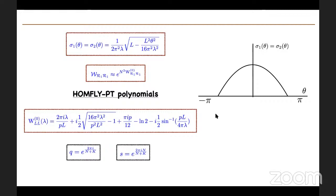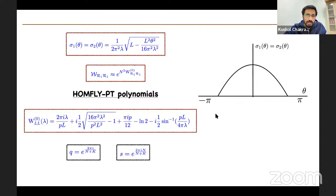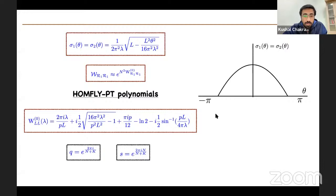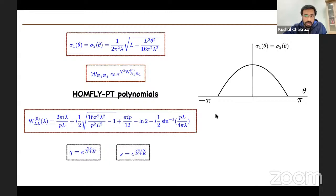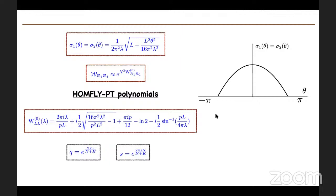Regarding more complicated non-torus knots, the speaker acknowledged there is currently no idea how to generalize these results. One suggestion was to calculate higher correlation functions in Chern-Simons theory — for example, Wilson loops with more components like the Borromean ring, which is a three-component generalization of the Hopf link. The speaker confirmed there is a closed-form expression for the Borromean ring and mentioned plans to generalize to more components, but no current method exists for more complicated knots.